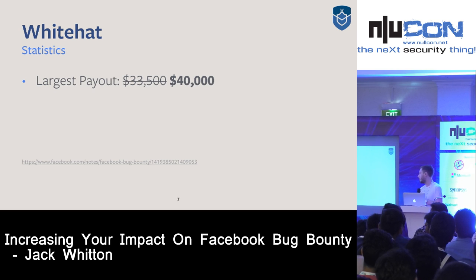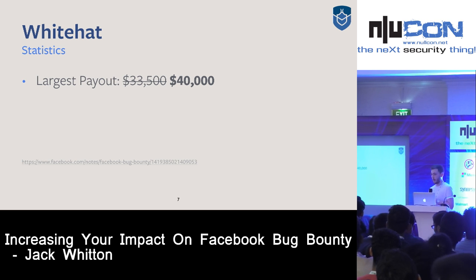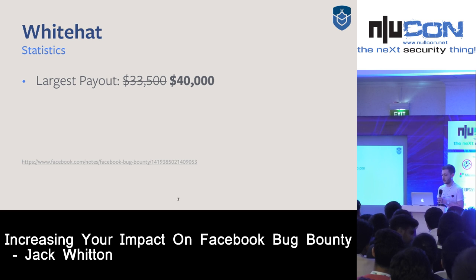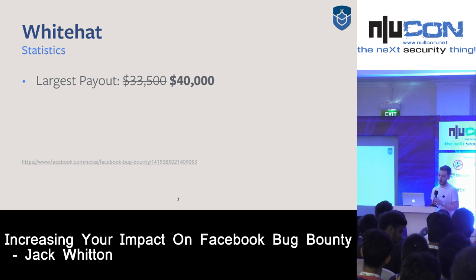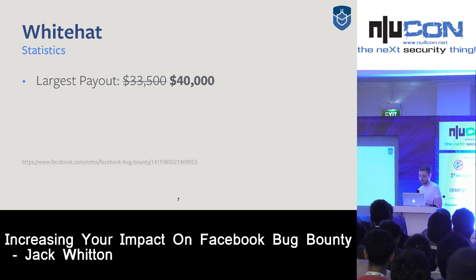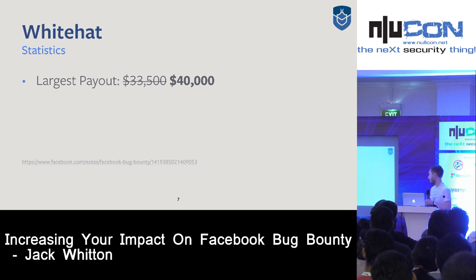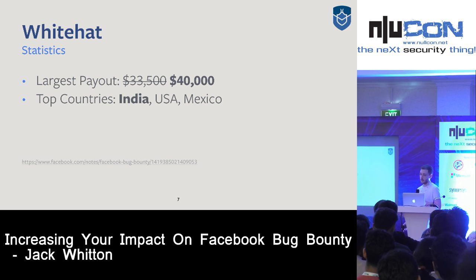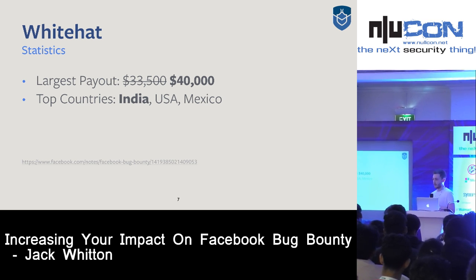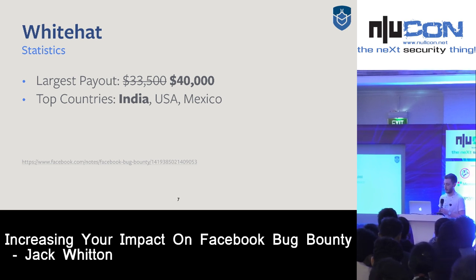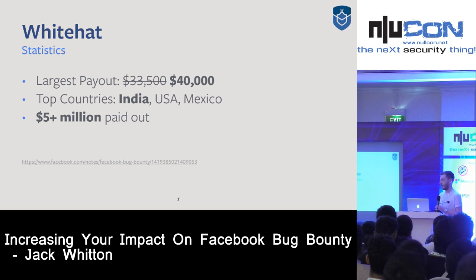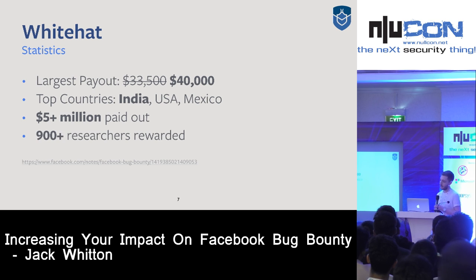Some statistics: our largest payout was $33,500, held by Reginaldo for over three years for a code execution issue in OpenID. In 2016 this record was beaten — a researcher found another code execution bug through the Imagetragick vulnerability published last year, and we paid out $40,000 for this. The top country for submissions and total payouts is India, followed closely by the USA and then Mexico.